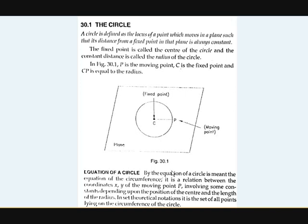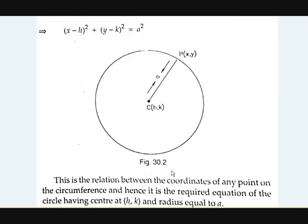What is the basic equation of a circle with center h comma k and some point on the locus P at x comma y? The equation is: x minus h, whole square, plus y minus k, whole square, is equal to a squared. This is the equation of a circle with center C at h comma k, point on the locus P at x comma y, and radius a.